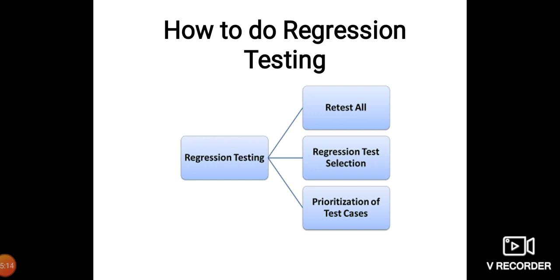The first approach is 'Retest All' — in this method, all tests in the existing test bucket or suite are re-executed. This is very expensive as it may require huge time and resources. The second approach is 'Regression Test Selection' — instead of re-executing the entire test suite, it is better to select part of the test suite to be run. Selected test cases can be categorized as either reusable test cases or obsolete test cases.